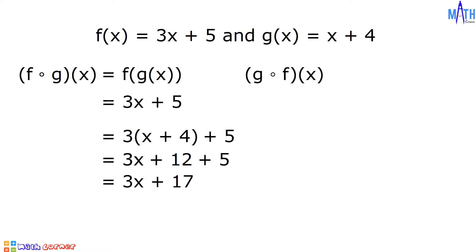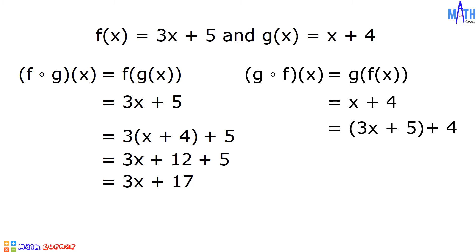Next is g composed with f of x. It is equal to g of f of x. f of x is equal to 3x plus 5. We will substitute 3x plus 5 to x in g of x. g of x is equal to x plus 4. x becomes 3x plus 5, plus 4. Since 5 plus 4 is equal to 9, then g of f of x is equal to 3x plus 9.